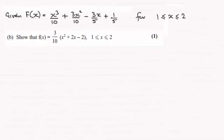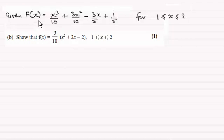Hi there. Now in the first part of this question, we worked out that the cumulative distribution function, capital F of X, equaled X cubed over 10 plus 3X squared over 10 minus 3X over 5 plus 1 fifth. And this was valid for X between 1 and 2 inclusive.